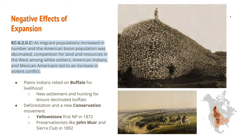Deforestation was also happening, especially in the Pacific Northwest where there are a lot of trees, and Yellowstone became our first national park given the overdevelopment occurring. A new movement led by advocates like John Muir arose to preserve natural resources in western lands. John Muir was a preservationist — different from a conservationist — because he wanted everything to remain pristine as it was. He created the Sierra Club in 1892.